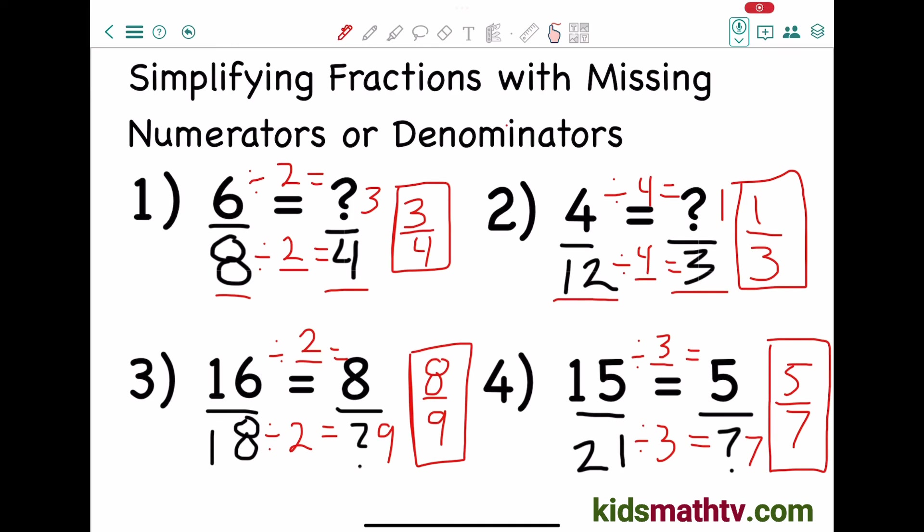So once again, when you're missing the numerator, try to look in the denominator and find the common factor. And whatever that factor is, you have to divide the numerator by that number. And you should find the missing numerator. But when you're missing the denominator, you have to find the factor in the numerator and divide that number by both sides. And then you should find the denominator.